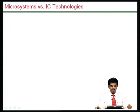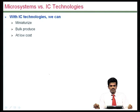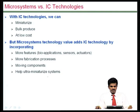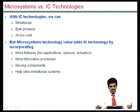Let us compare what is usually done in IC fabrication technologies and what is required for microsystems fabrication. In IC technologies, the trend is essentially to miniaturize by bulk producing, which has resulted in building chips at much lower cost. But in microsystems, we have to make use of microfabrication with moving components, requiring additional fabrication processes, so that we can miniaturize the entire system, possibly within a package or even within a chip.